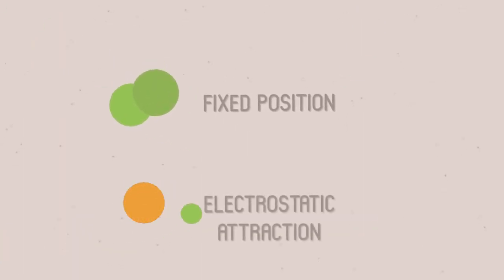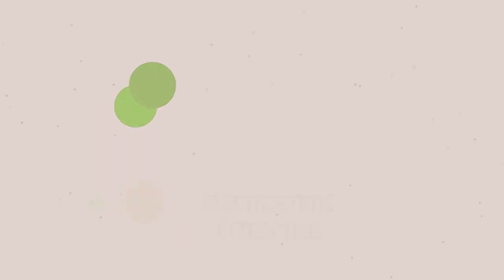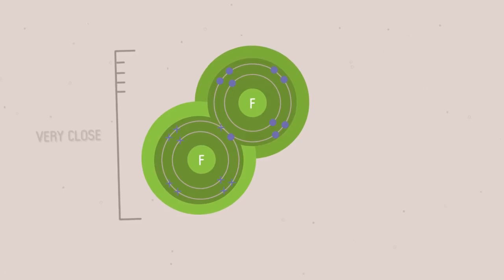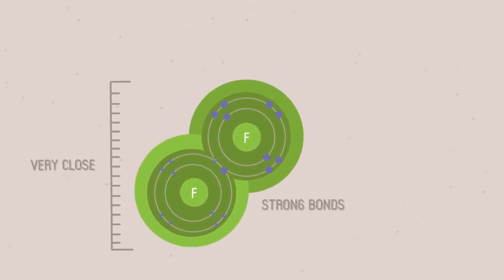Covalent bonds are directional, which means they are in a fixed position, like holding hands. This is different from ionic bonds, which are formed with an electrostatic attraction between charged ions. The overlap between orbitals means that the atoms in covalent bonds are very close. These things make covalent bonds strong.